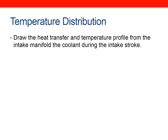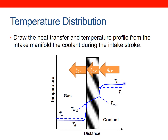In the lecture I asked you to draw the heat transfer and temperature profile from the intake manifold into the coolant during the intake stroke. Because in the intake manifold the incoming air is at ambient temperature and the coolant is at around 85 degrees, the heat transfer goes the other way. So we start at the coolant temperature, follow a non-linear distribution to the wall temperature on the coolant side, then have a linear temperature distribution through the wall of the intake manifold and cylinder head to the wall temperature on the gas side, and then a non-linear distribution up to the gas temperature in the intake manifold.